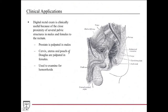The digital rectal exam is clinically useful because the rectum has significant spatial relationships to several pelvic structures in both males and females. In males, the prostate is just anterior to the rectum, so an examiner can palpate that area. Prostate cancer typically develops in the posterior lobes and feels hard, which is alarming compared to a soft prostate. BPH, a benign condition, develops more centrally around the urethra.